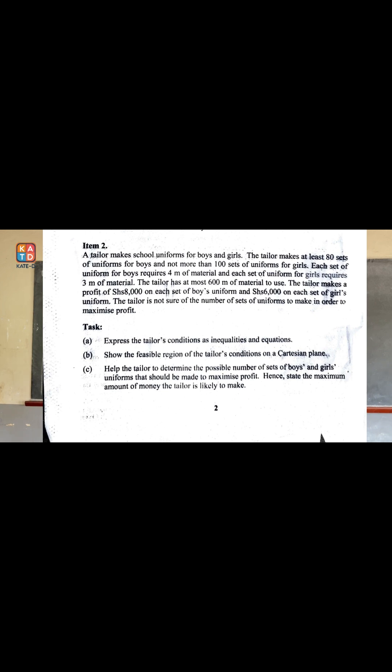The tailor makes a profit of 8,000 Ugandan shillings on each set of boys uniform and 6,000 Ugandan shillings on each set of girls uniform. The tailor is not sure of the number of sets of uniforms to make in order to maximize the profit.